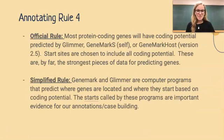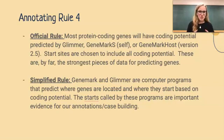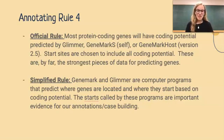The fourth rule reads: GeneMark and Glimmer are computer programs that predict where genes are located and where they start based on coding potential. The starts called by these programs are important evidence for our annotations. Glimmer and GeneMark have been trained to make predictions on where gene starts are, but ultimately we are the decision makers, not the computers. Sometimes they'll disagree, which is why we are annotating — to find discrepancies and make the best judgment. If they do agree, that's pretty good evidence that a start begins at a particular base pair location.